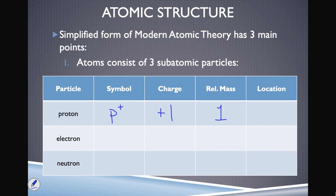Where are protons found? They are found inside the nucleus of the atom. Neutrons are also found inside the nucleus of an atom.